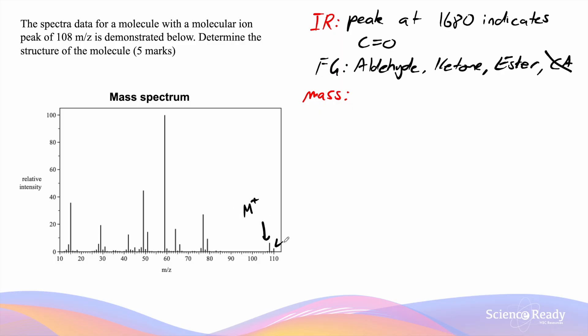But what we notice on the mass spectrum is actually there is an M+2 peak. An M+2 peak indicates to us that this is a halogenated compound that contains either chlorine or bromine.